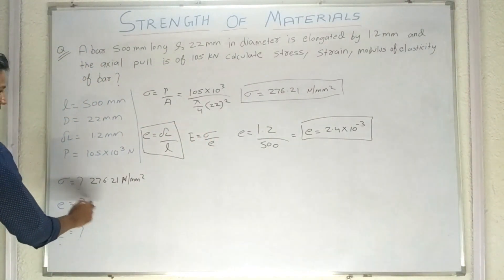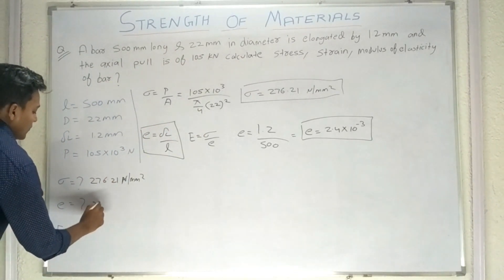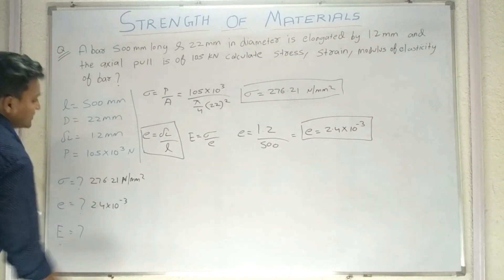e equals to 2.4 into 10 raised to minus 3. Aapka strain, strain ka koi unit nahi hota, isme koi unit nahi aayega, 2.4 into 10 raised to minus 3.